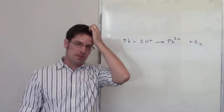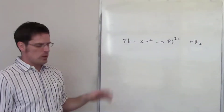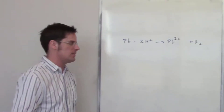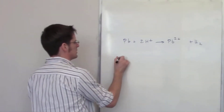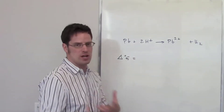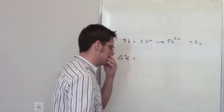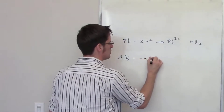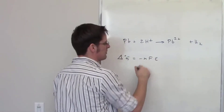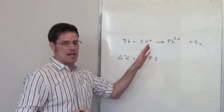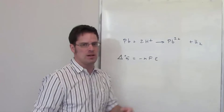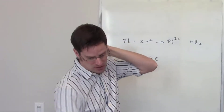This question gives me the standard cell potential for this reaction and asks me to calculate the value of delta G. There's an equation that says delta G for any electrochemical process is equal to negative N multiplied by F multiplied by E, where N is the number of moles of electrons being exchanged in oxidation and reduction, F is Faraday's constant, and E is the electrochemical potential, which is given to us.